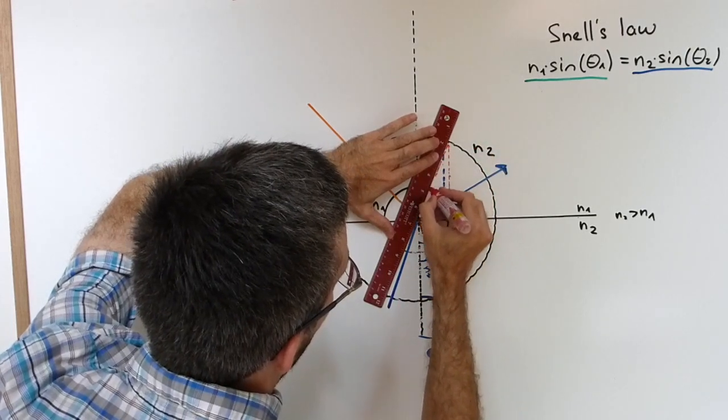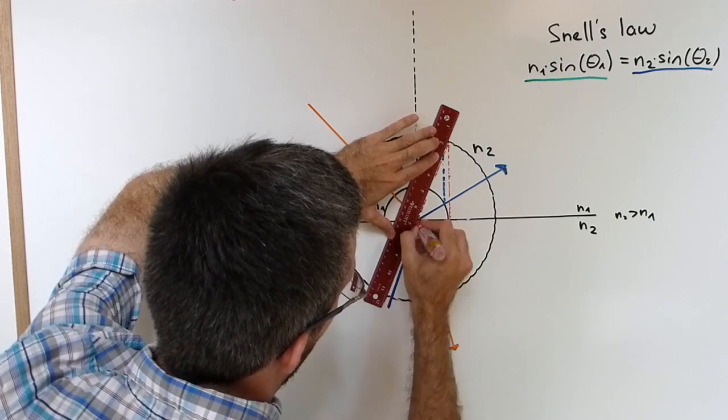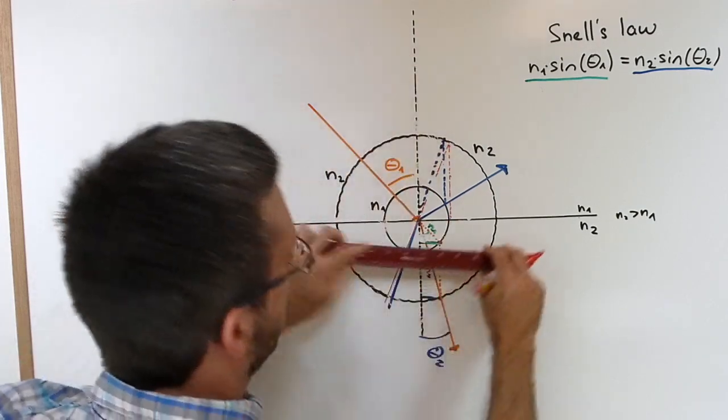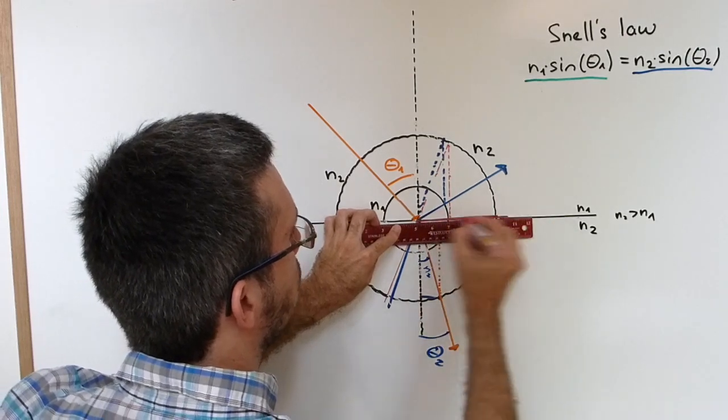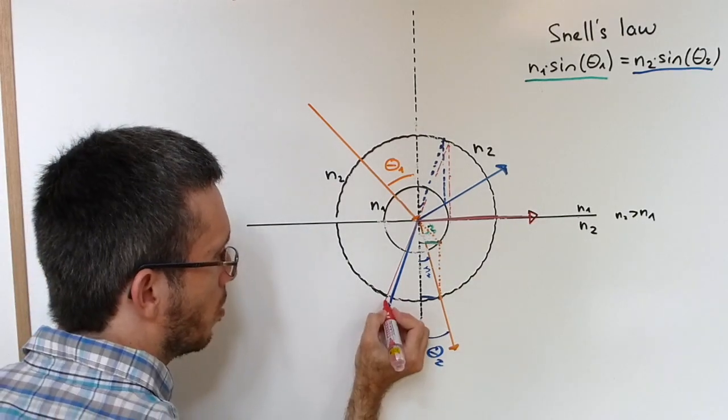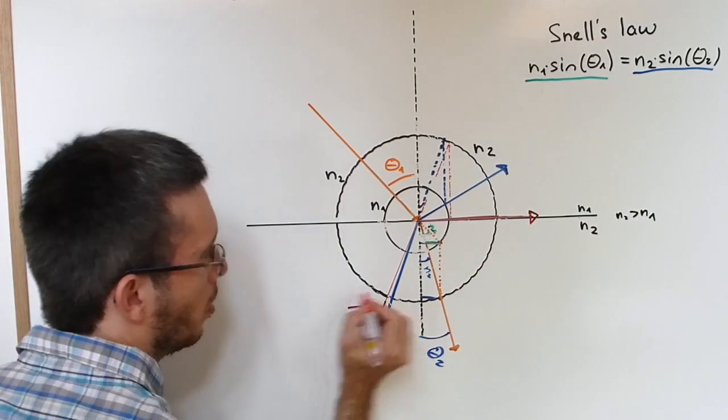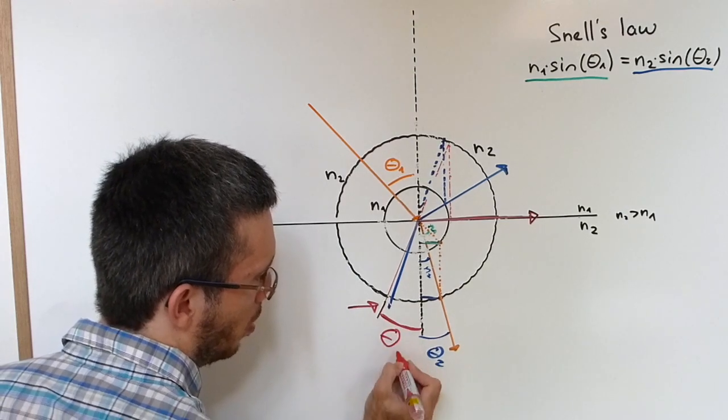I connect like this. And here the red one was my critical angle, which will be refracted along the surface. So this one here. And here I have my critical angle.